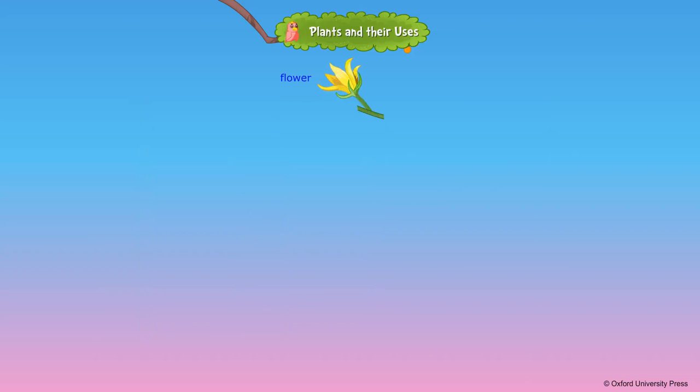Most plants produce flowers. Flowers are the most attractive parts of a plant that turn into fruits. Fruits protect the seeds inside them. The main function of seeds is to give rise to new plants.